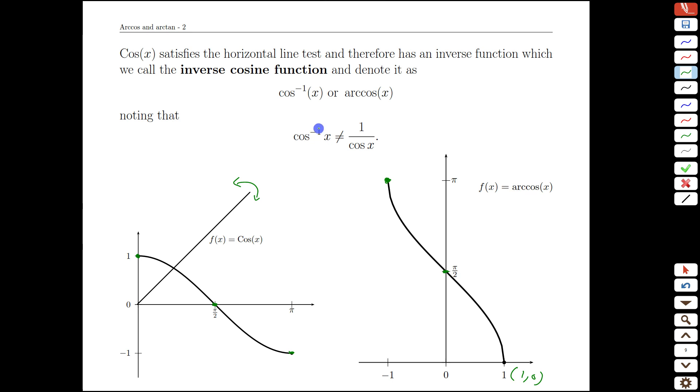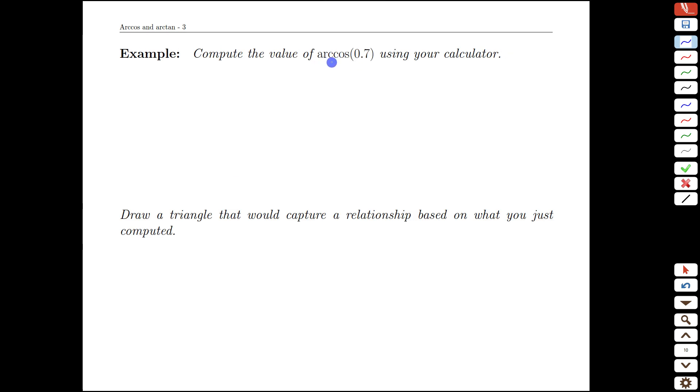Again, remembering this inverse, this negative 1 here means inverse and not reciprocal. It's not 1 over cosine. As a quick practice exercise, we can use the calculator to find the arc cos of 0.7. Again, making sure we're in radians because it's a calculus class, and we get a value of 0.795.